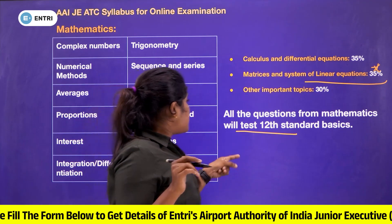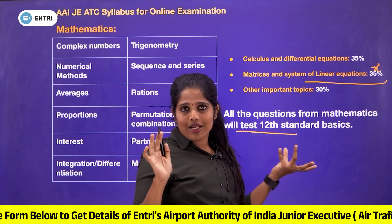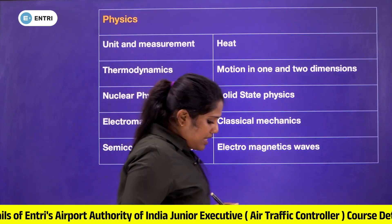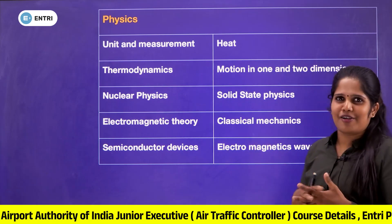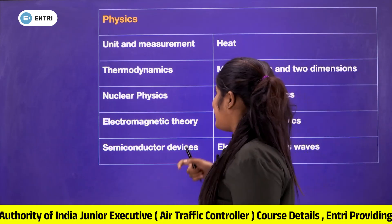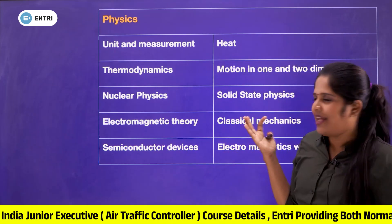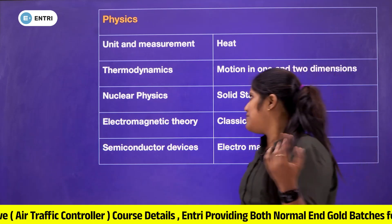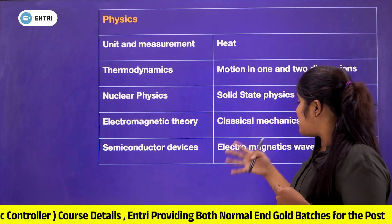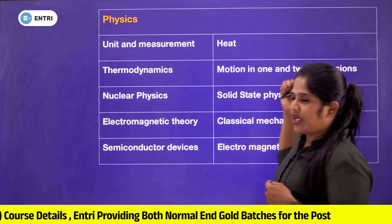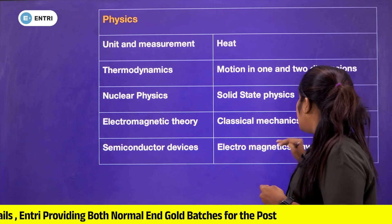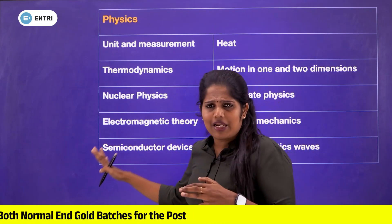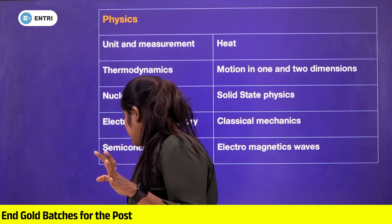We don't need to study B.Tech level. Physics topics include: units and measurements, thermodynamics, nuclear physics, electromagnetic theory, semiconductor devices, heat, motion in 1 and 2 dimensions, solid state physics, classical mechanics, and electromagnetic waves. Physics is not a common topic, but we study it quite a lot. The maximum physics marks will be 60.